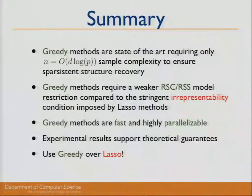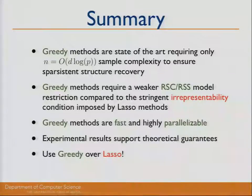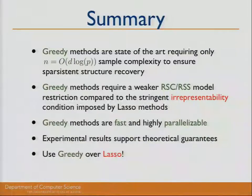To summarize: the greedy methods are state of the art, requiring only M equal to order D log P sample complexity for sparse structure recovery. They require much weaker model restrictions — RSC and RSS — as opposed to the e-representability condition of lasso methods. These methods are fast, highly parallelizable, and our experimental results support our theoretical guarantees. I encourage you to use greedy over lasso.